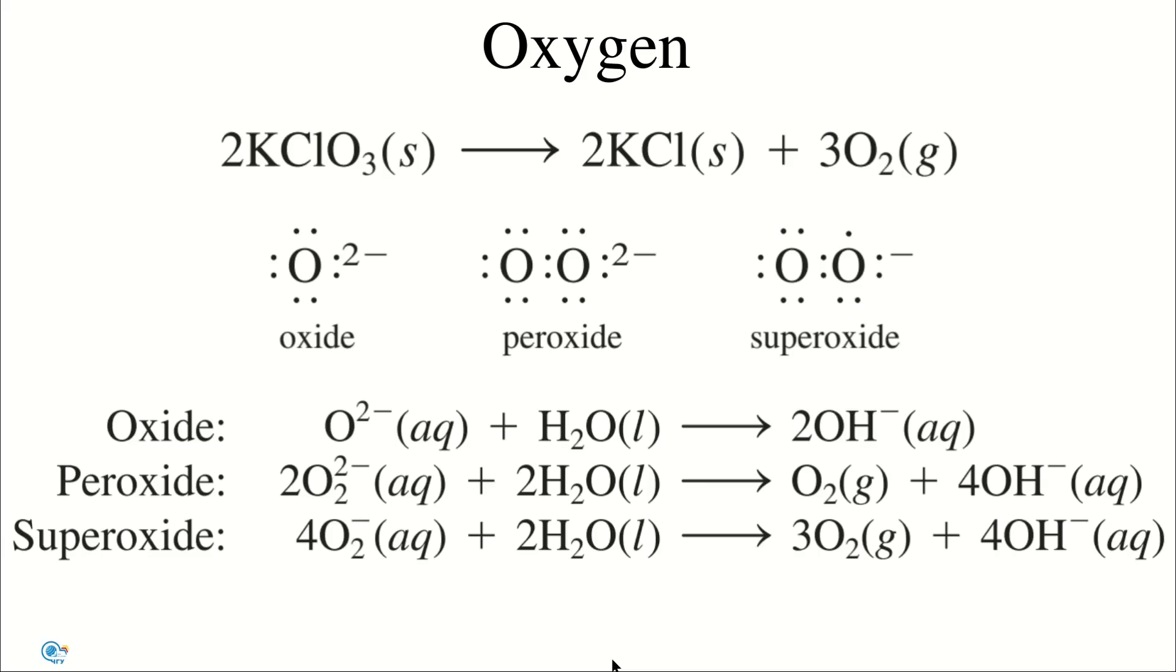Oxygen forms three types of oxides: normal oxide, simply the oxide, which contains O2- ion; the peroxide, which contains the O2^2- ion; and superoxide O2- ion.